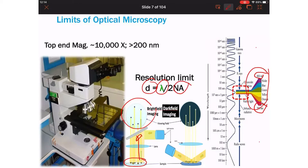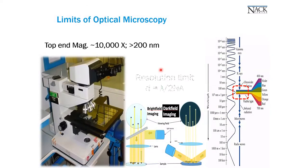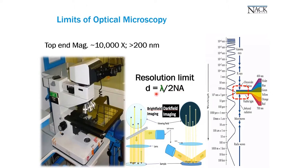NA is numerical aperture — it has to do with the sizes of the optical lenses. The biggest number NA can have is 1. So plugging in numbers: 400 nanometers divided by 2 times 1 gives D equal to 200 nanometers theoretically. We can't resolve features smaller than 200 nanometers, and even 200 nanometers is very ambitious for optical microscopy.